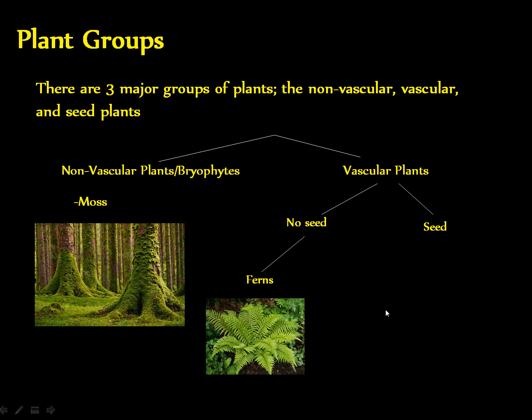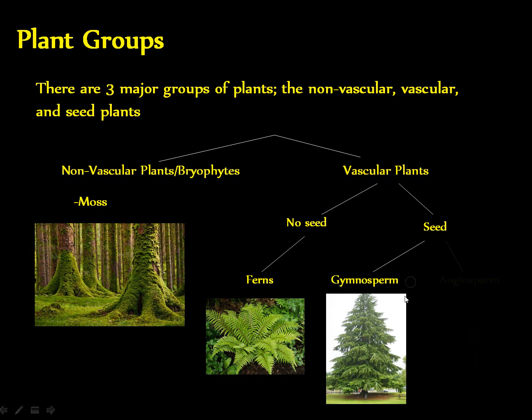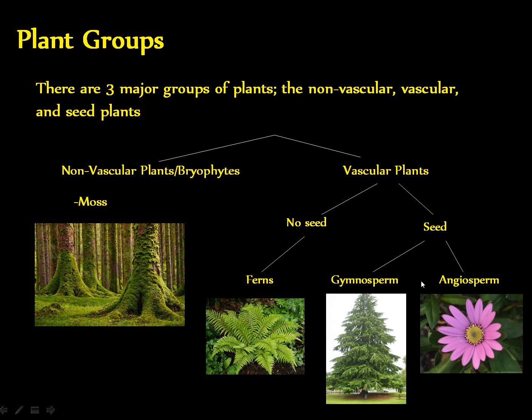If the vascular plant has a seed, it could be either a gymnosperm or an angiosperm. The gymnosperms have an exposed seed, which means their ovule is not contained within any heavily fortified material like a fruit. Their seeds are more exposed than the angiosperms. An example of a gymnosperm would be a pine tree, where their seeds are located just under the scales of certain pine cones — their ovulate cones.